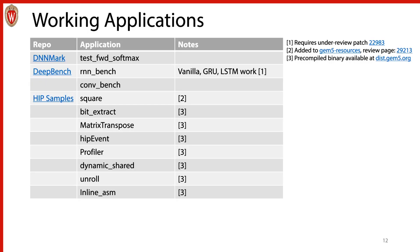This slide contains information about the applications we've tested. Going through them in order: DNNMark is a benchmark suite to test various layers of a neural network. Next, DeepBench is used to benchmark various types of neural networks — in particular, we've tested recurrent neural networks and convolutional neural networks. The HIP sample applications are benchmarks used to verify that your ROCm installation and its various components work, and these are also the types of applications we want to implement in continuous integration to verify we don't break anything when we patch the GPU model.